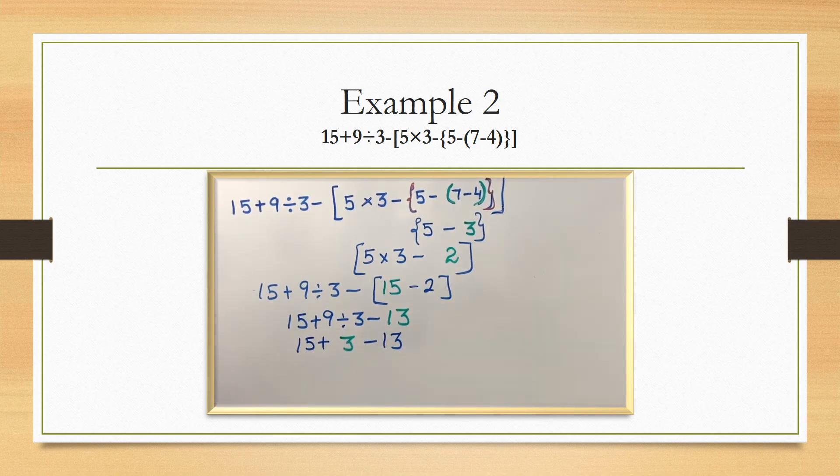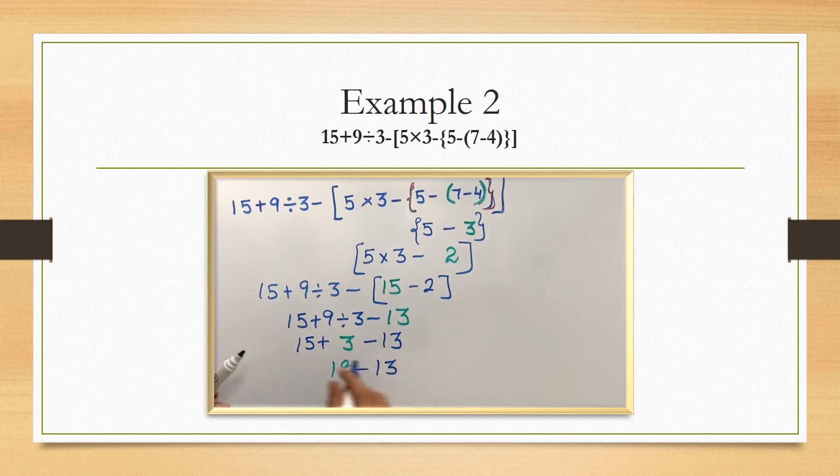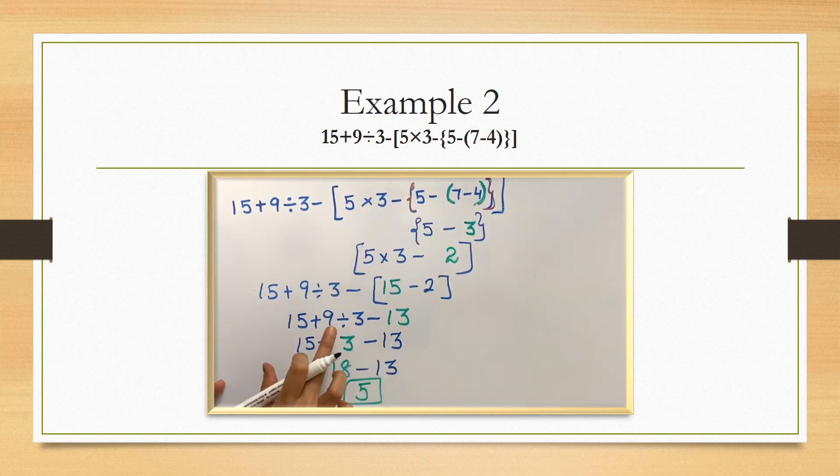The remaining is the addition and subtraction. In this, addition gets the priority. 15 plus 3, it's 18. So the last subtraction. 18 minus 13, 5. That's the answer. So first we have to finish the brackets, then the division, then addition, then subtraction.